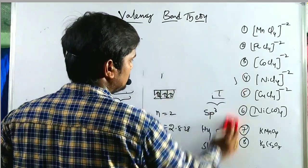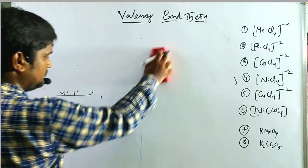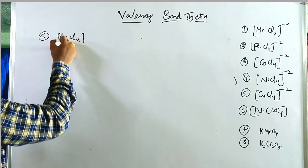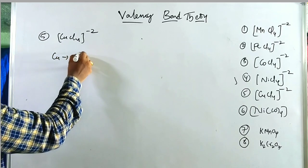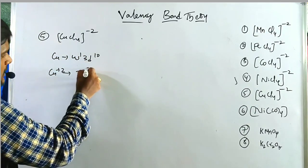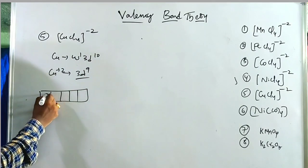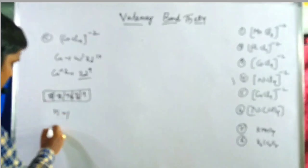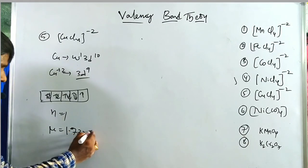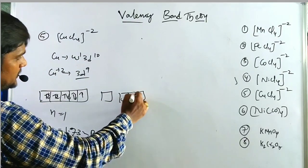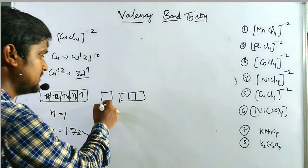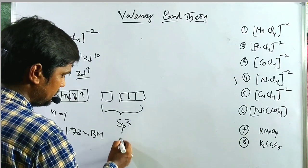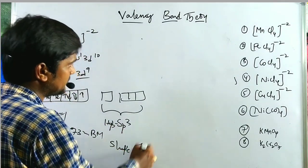Fifth tetrahedral example: [CuCl₄]²⁻. Copper configuration is 4s¹ 3d¹⁰. Cu²⁺ gives 3d⁹ configuration with 9 electrons. Using Hund's rule, Pauli's principle, and Aufbau principle, n = 1, μ = 1.732 Bohr magnetons — paramagnetic. The 4s and 4p orbitals are vacant. With 4 ligands, sp³ hybridization occurs, giving tetrahedral shape.